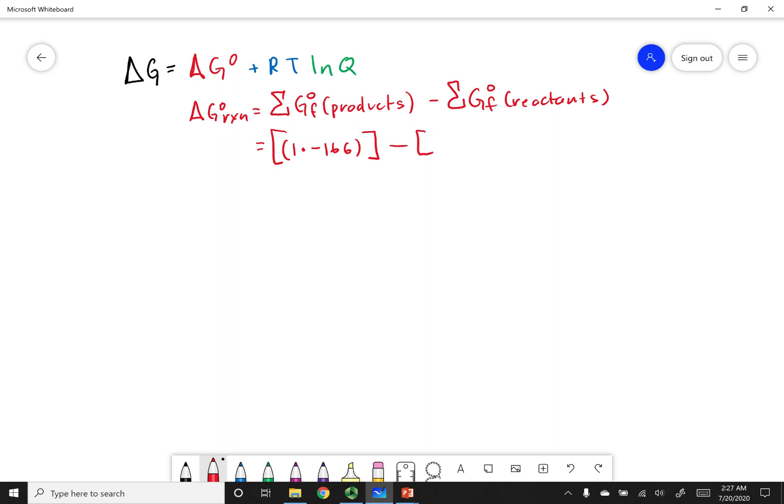Now my reactants, the first one I have is carbon monoxide. There's only one of them, so one times negative 137. Now hydrogen is in its elemental form, so remember that that delta G of formation is going to be zero, so I don't have to include it into my equation. If I go ahead and do this calculation out, what I will get is negative 29 kilojoules.